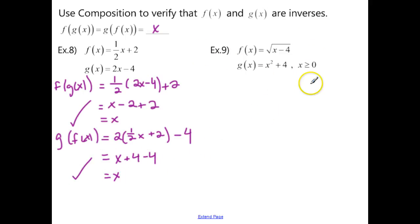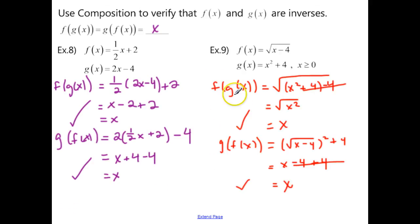I want you to go ahead and try example 9, and then check back with me when you're finished. So hopefully when you've found f of g of x, it should work out, so you get x. g of f of x, you should also get x. And so these are inverses of each other.